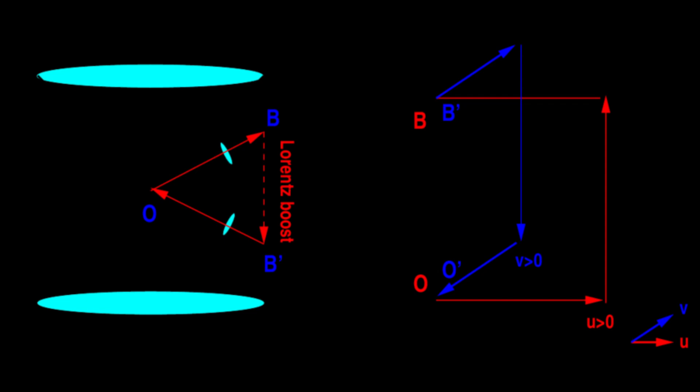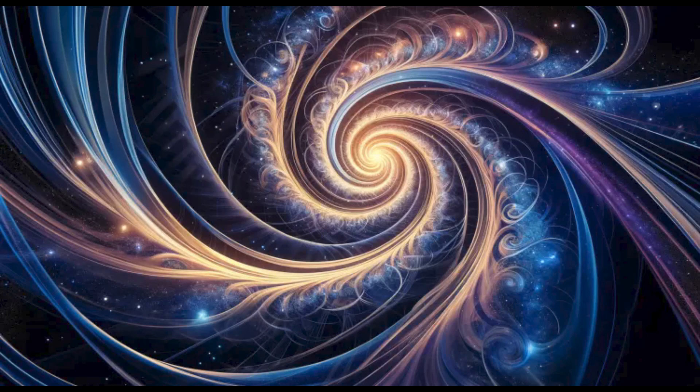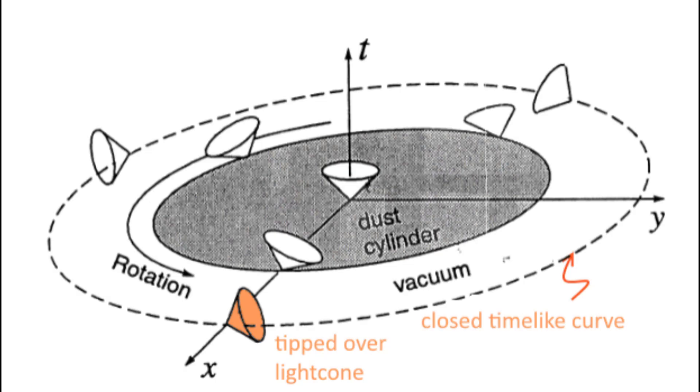For example, the concept of reversible time and closed time-like loops challenges fundamental principles of causality and determinism, suggesting that our understanding of time may be incomplete or context-dependent. We will examine the theoretical basis of CTLs, particularly in the Gödel universe, as solutions to Einstein's field equations, and discuss their implications for our understanding of time, causality, and potential quantum phenomena. The concept of closed time-like loops, CTLs, is a controversial aspect of theoretical physics.